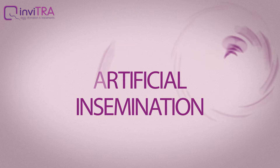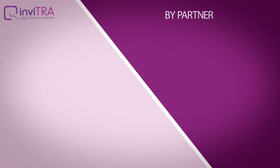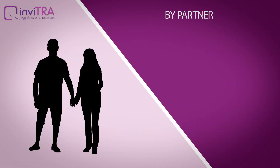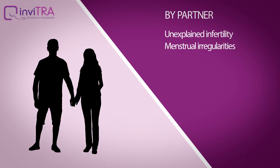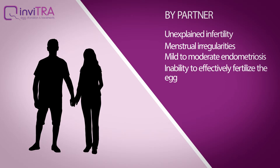Artificial insemination by partner, also known as artificial insemination by husband, is the type in which the partner's sperm is used. This kind of artificial insemination is used in cases of unexplained infertility, menstrual irregularities, mild to moderate endometriosis, inability to effectively fertilize the egg, and mild sperm abnormalities concerning sperm concentration, sperm morphology, and sperm motility.